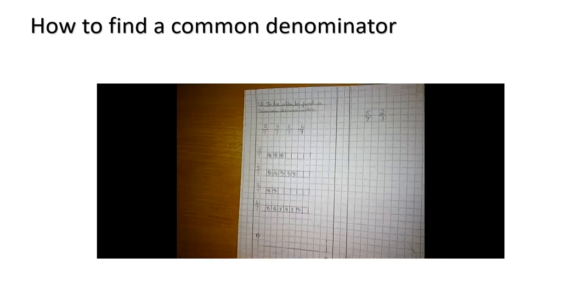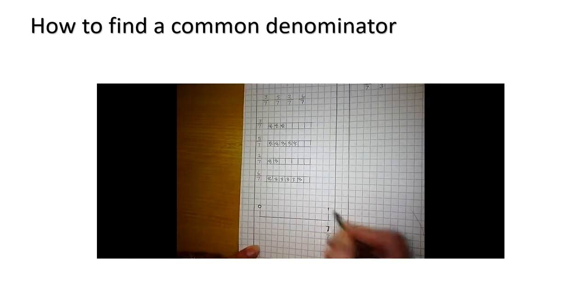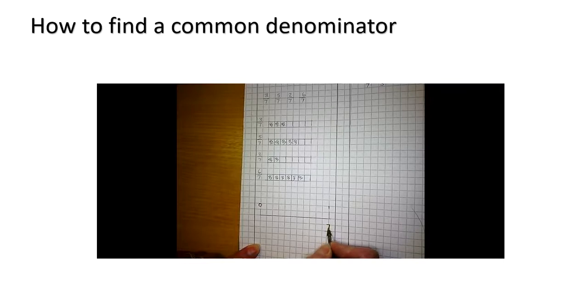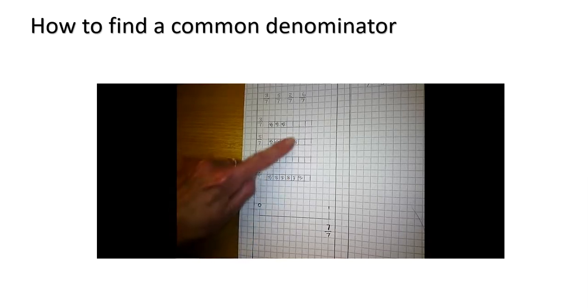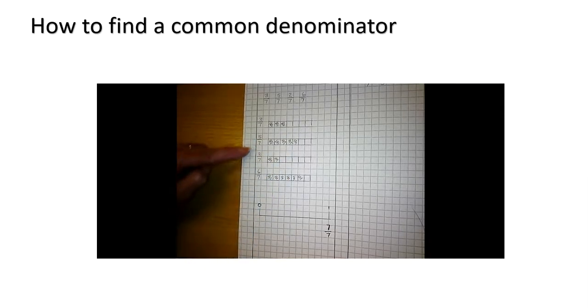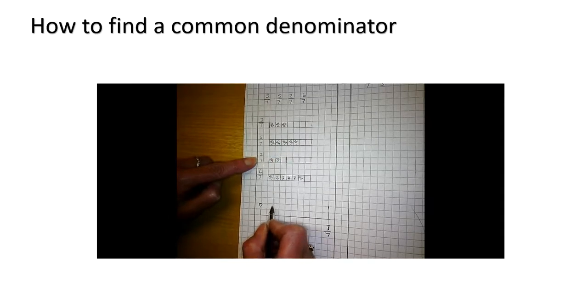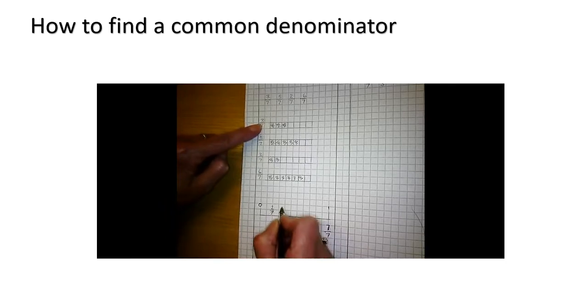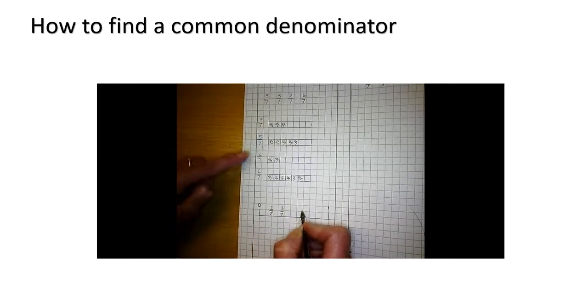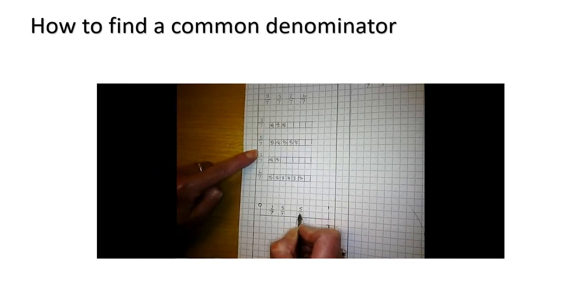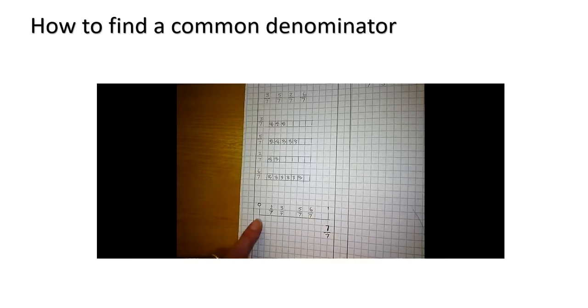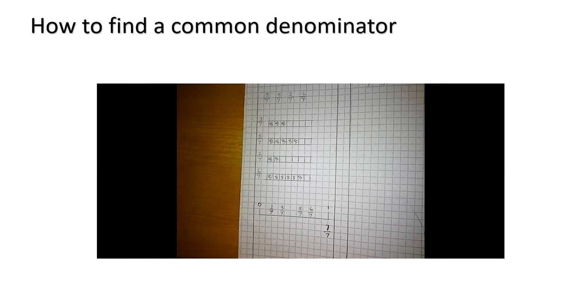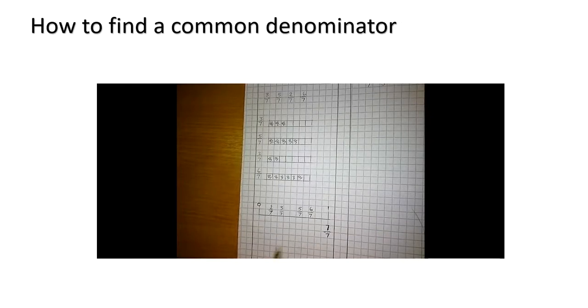And I can now put those on a number line. If I put 0 at the beginning of my number line and I put 1 whole here, I know that 7 sevenths is 1 whole. It's the same as 1 whole. So I know that my smallest fraction from my bar models will be 2 sevenths. So I'm going to put this here, 2 sevenths, followed by 3 sevenths, followed by 5 sevenths, and then 6 sevenths. And I've now put them in order. I've compared them and I've ordered them lovely and easy. My denominator was all the same. I didn't have to worry.